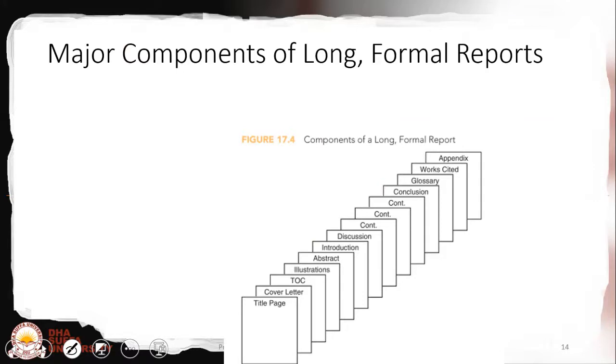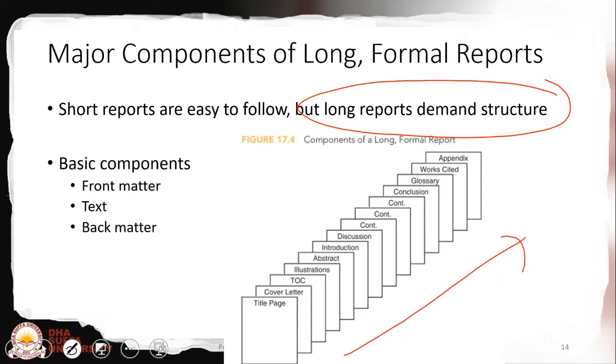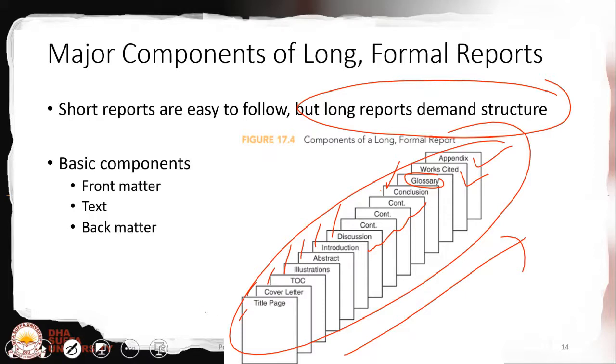The major components of a long formal report: short reports are easy to follow but long reports demand proper structure. This is the structure we should follow: title page and cover, cover letter, table of contents, illustrations, abstract, introduction, discussion, conclusion, glossary, works cited, and appendices. We can divide this into three portions: the front matter, the text in between, and the back matter.